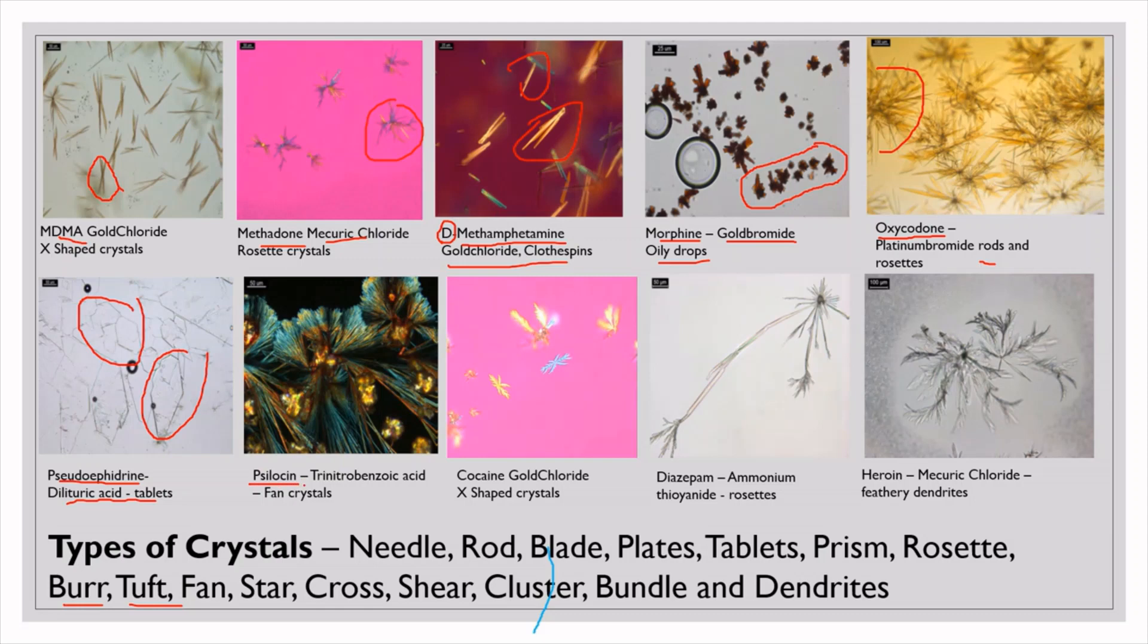This one is psilocin. Trinitrobenzoic acid is the reagent used - fan crystals. We can see fan crystals here. These are very unique. All drugs which I have seen among all, psilocin is very unique crystal which is formed. That is a psychotropic drug.